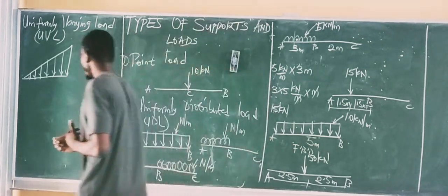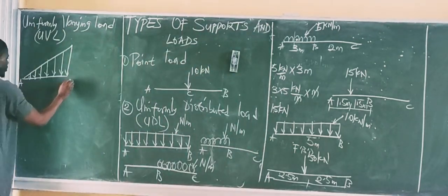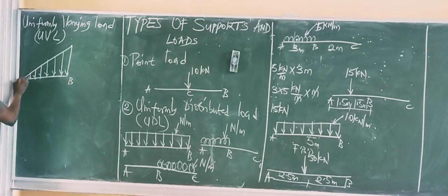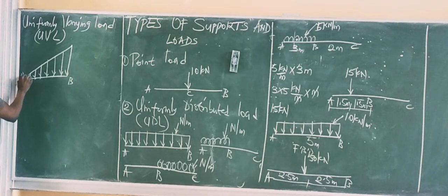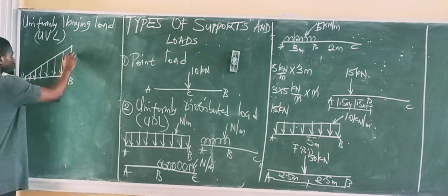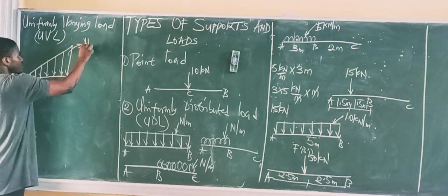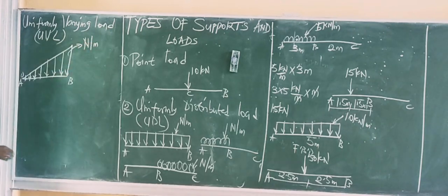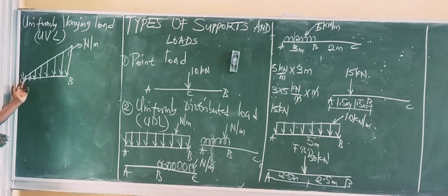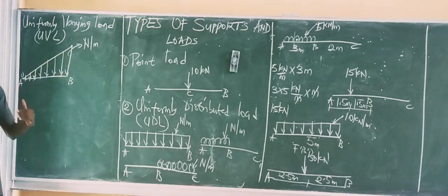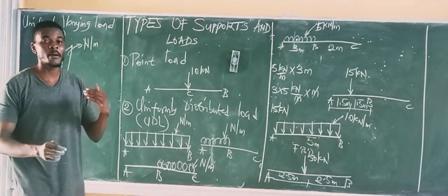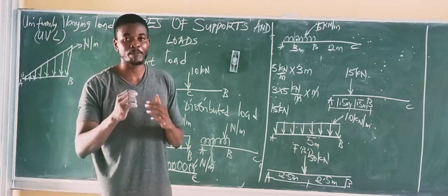Looking at the UVL: here is point A and here is point B. The intensity at point A is zero — it increases from zero, and at each successive point the value is different, reaching its maximum at the other end. It is also measured in newtons per meter. It is called variable because the load intensity at the beginning is different from the middle, which is also different from the end — it increases from zero up to a maximum value.